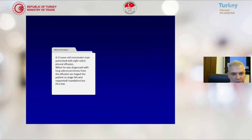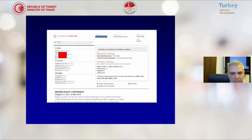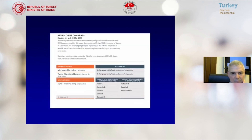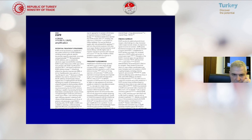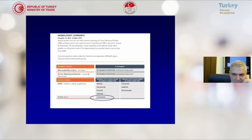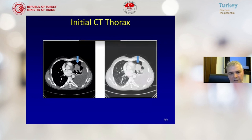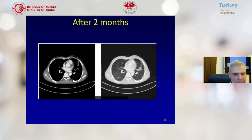A 58-year-old non-smoker man presented with right-sided pleural effusion. When he was diagnosed with lung adenocarcinoma from the effusion, we staged the patient as stage 4 lung cancer and requested Foundation One CDX test. The patient had an EGFR mutation, so we gave this patient osimertinib. You can see on the right a huge lung mass with pleural effusion. After two months with the smart anti-EGFR drug osimertinib, the patient's mass disappeared, as you can see in this slide.